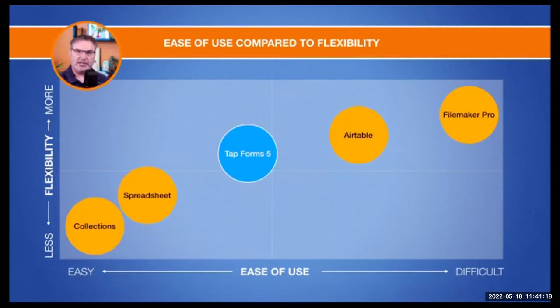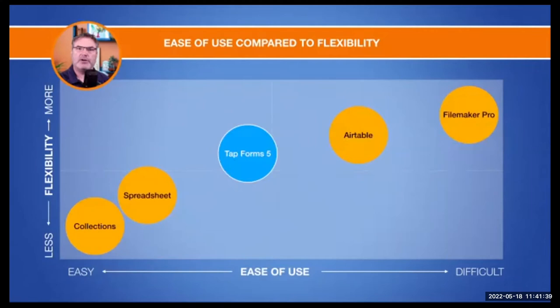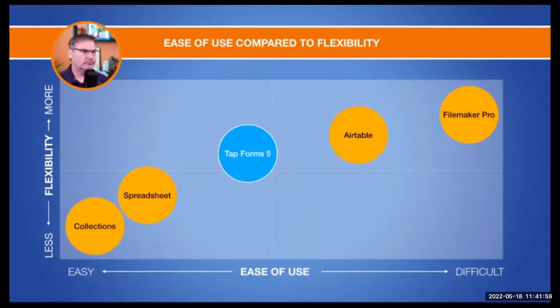Tapforms 5 is relatively easy to use and offers quite a bit of flexibility. It's a good solution for managing your lists — and that's basically what a database is, it manages your lists. It could be groceries, invoices, serial numbers, or albums. I collect LPs and have a database where I can track which albums I have. When I go to an antique store and see an album, I just pull it up on my phone to see if I already have it.